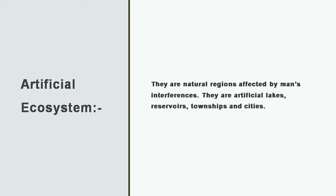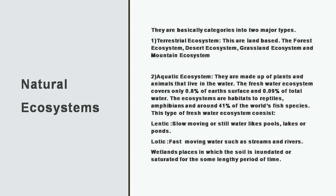In artificial ecosystem, we again have two categories: land ecosystem and freshwater ecosystem. A small world into a big world forms an ecosystem. Artificial ecosystem refers to natural regions affected by human interference — artificial lakes, reservoirs, townships, and cities all come under artificial ecosystem.